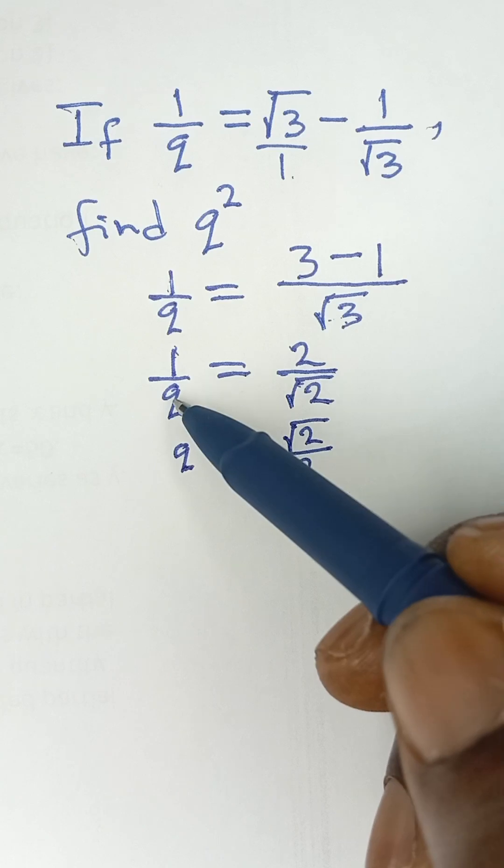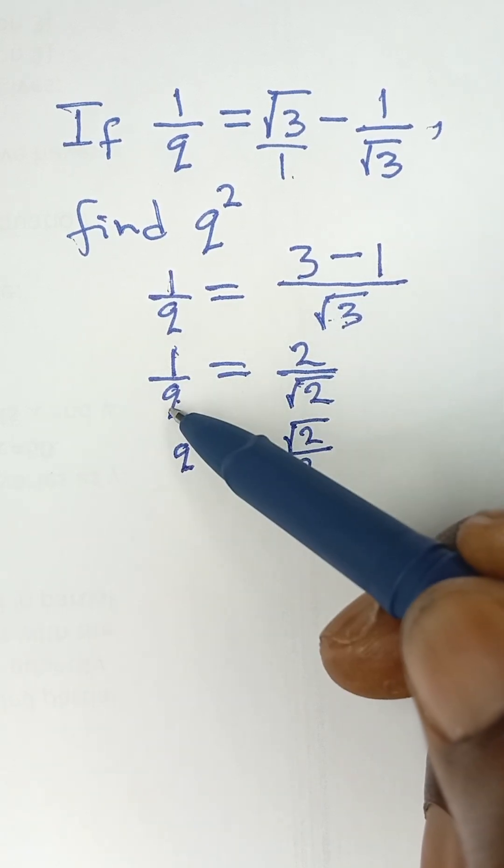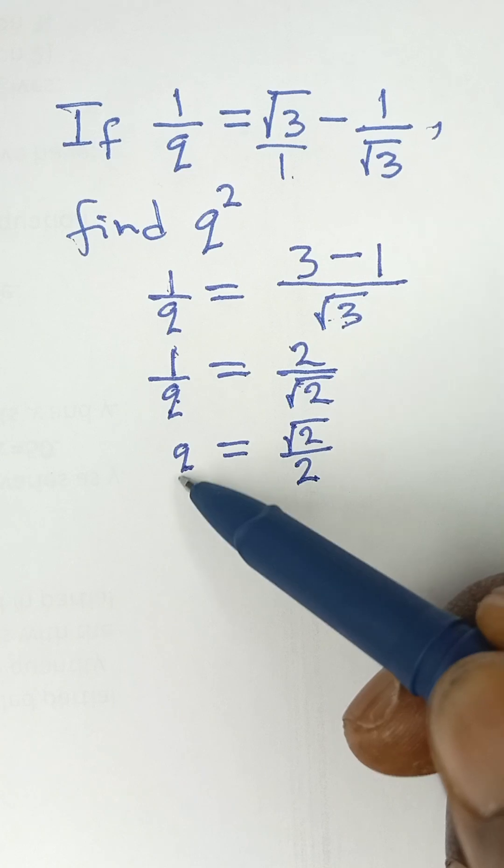If we are getting Q, we simply take this Q up and bring 1 down. And that will give us Q over 1, which is the same thing as Q.